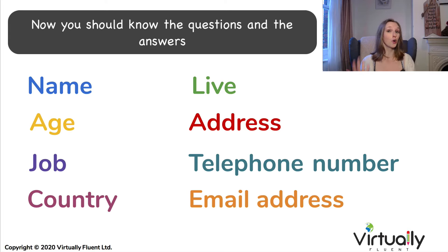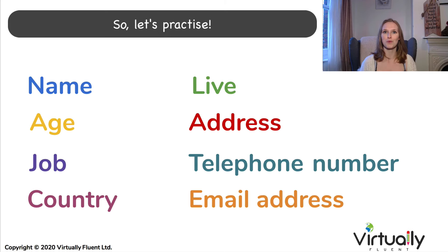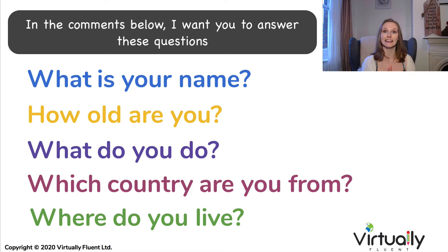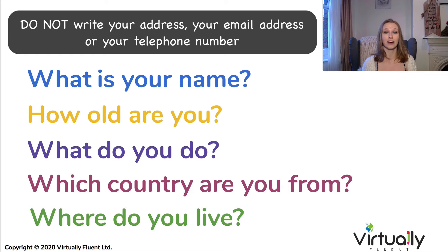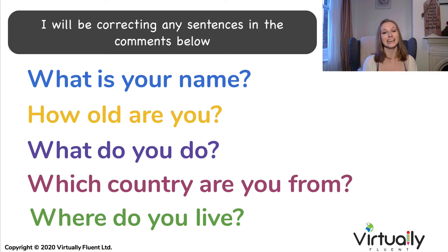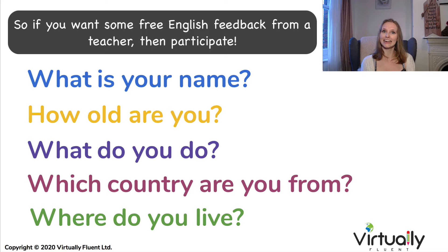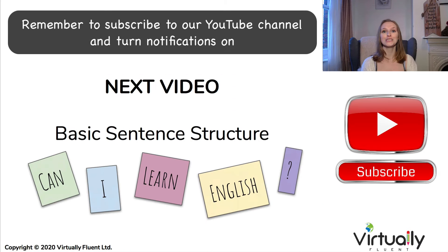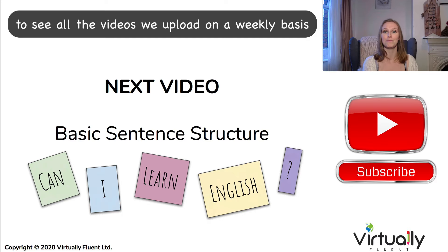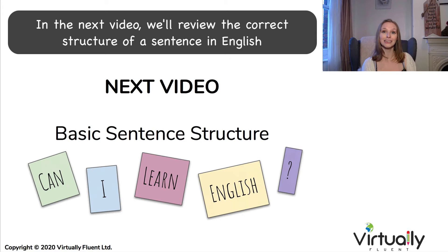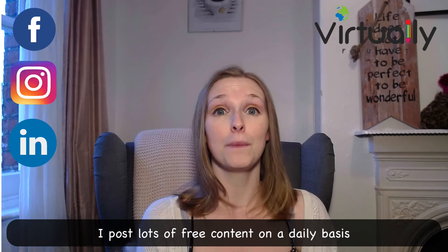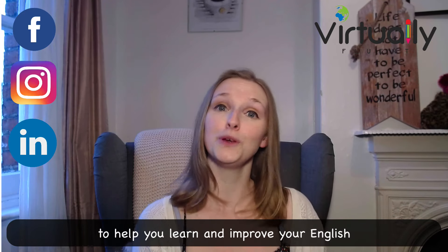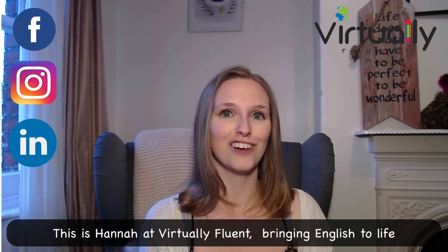My email address at the company is admin at virtually dash fluent dot com. So now we've learnt how to give all our personal information in English. You should know the questions and the answers. Let's practice — in the comments below I want you to answer these questions. Please be careful with your personal information: do not write your address, your email address, or your telephone number. I will be correcting sentences in the comments below, so if you want some free English feedback from a teacher then participate. Remember to subscribe to our YouTube channel and turn notifications on to see all the videos we upload on a weekly basis. In the next video we'll review the correct structure of a sentence in English. Don't forget to follow us on Facebook, Instagram, and LinkedIn — I post lots of free content on a daily basis to help you learn and improve your English. This is Hannah at Virtually Fluent, bringing English to life.